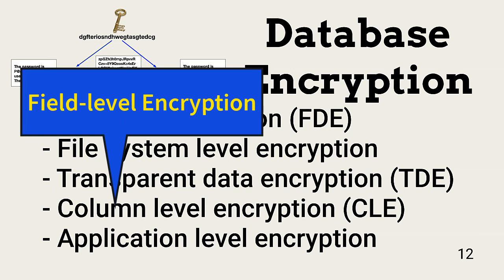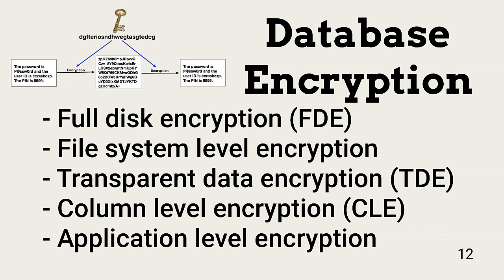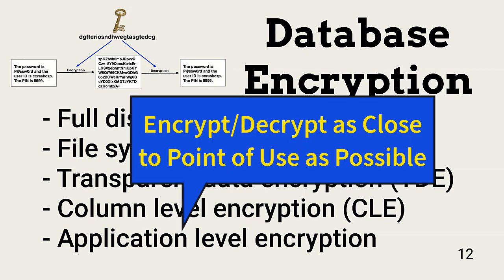CLE, or column-level encryption, enables granular control over what is protected in each file. This approach is highly flexible, but it's often difficult to manage. CLE can also adversely affect database performance. Application-level encryption protects the data even if the database system is compromised, because encryption is the responsibility of application layer software that accesses the data before it's passed to the database system. Encryption and decryption should be done as close to the point of use as possible — this can become more complex, but it's very secure.